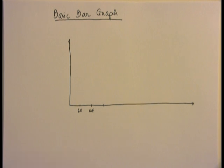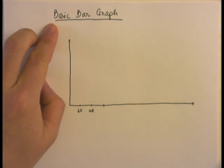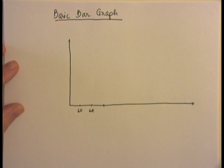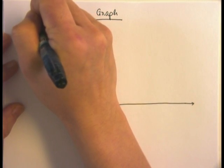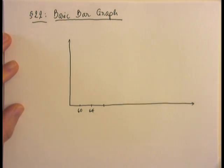Once you build your basic frequency distribution table, we can now build the basic bar graph. This is another topic discussed in section 2.2. The idea of a bar graph is that we're trying to make a visual display of the frequency from the basic frequency distribution table that we constructed earlier.